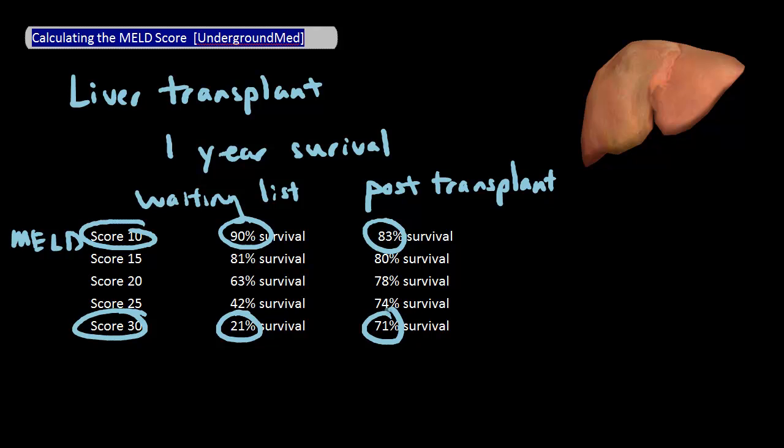This is why the MELD score is used to help allocate liver transplants, because for those with high MELD scores, their survival rates are very low if they didn't get a transplant in comparison to patients who do get a transplant. The transition point, where transplantation has a higher one-year survival than the waiting list, is about a MELD score of 15.